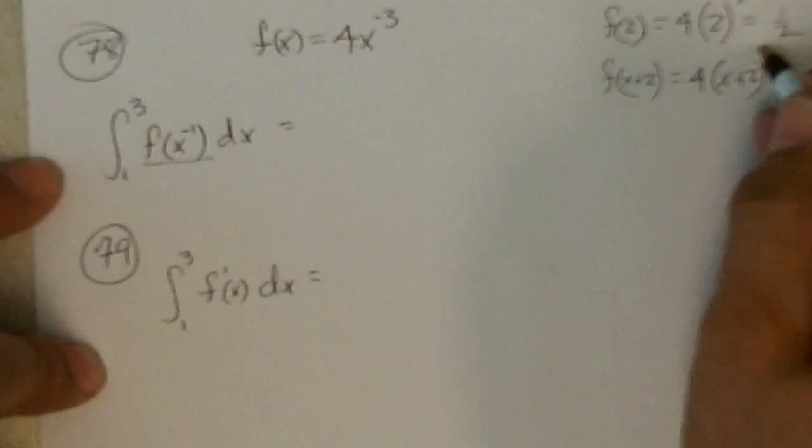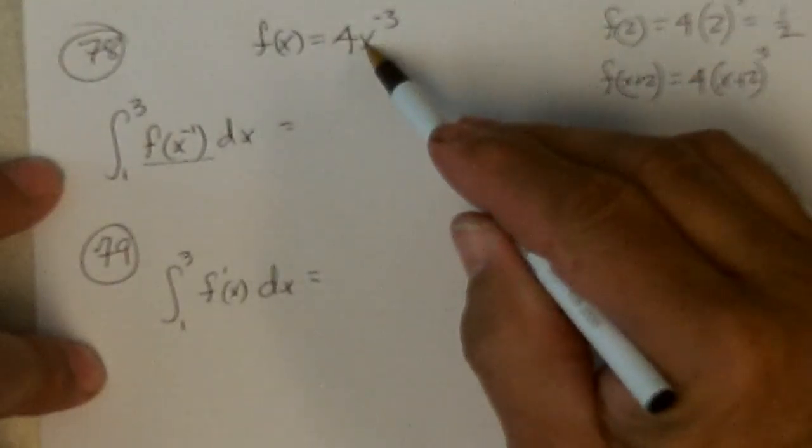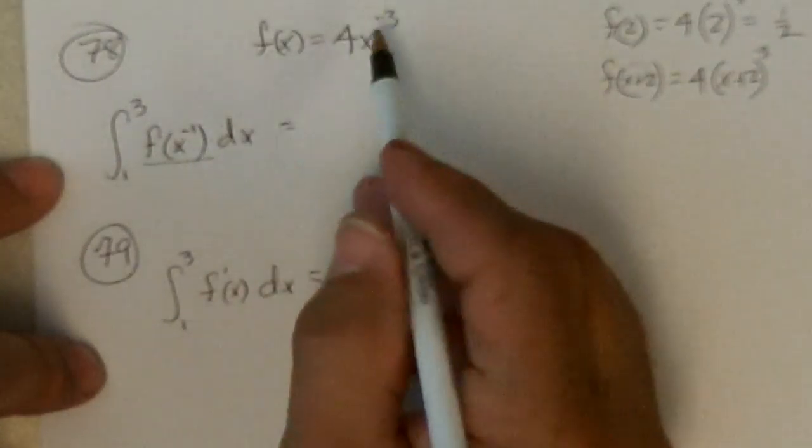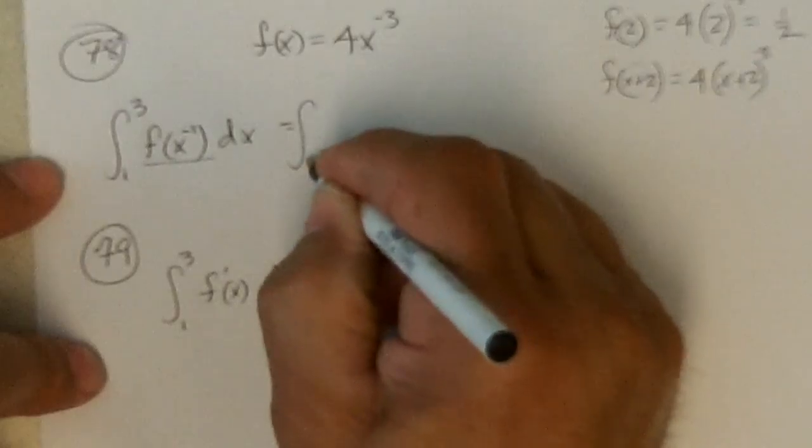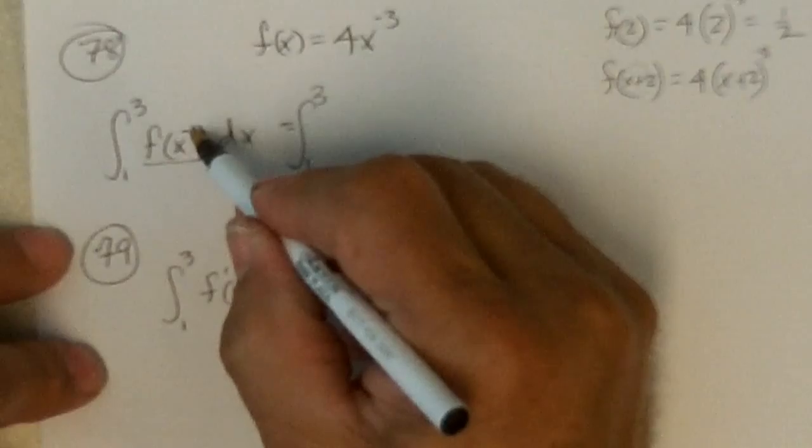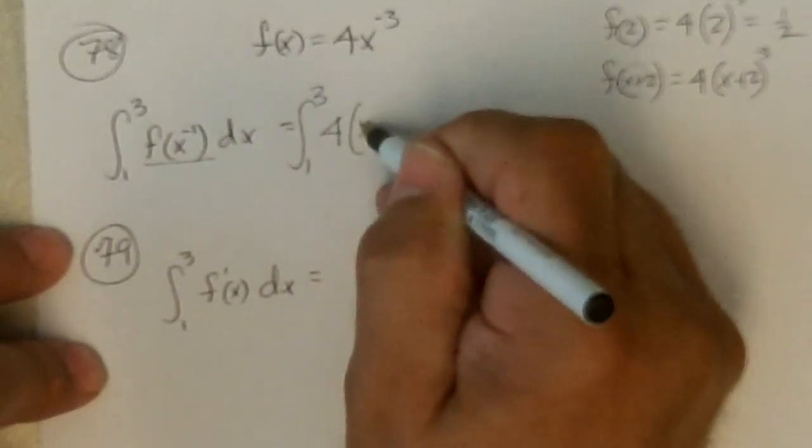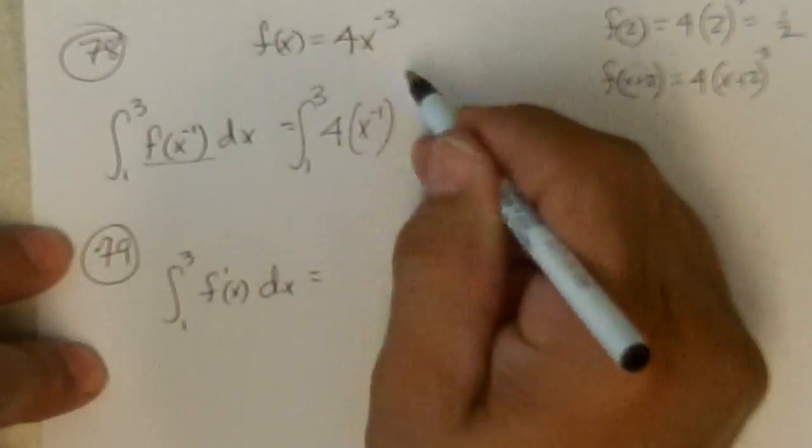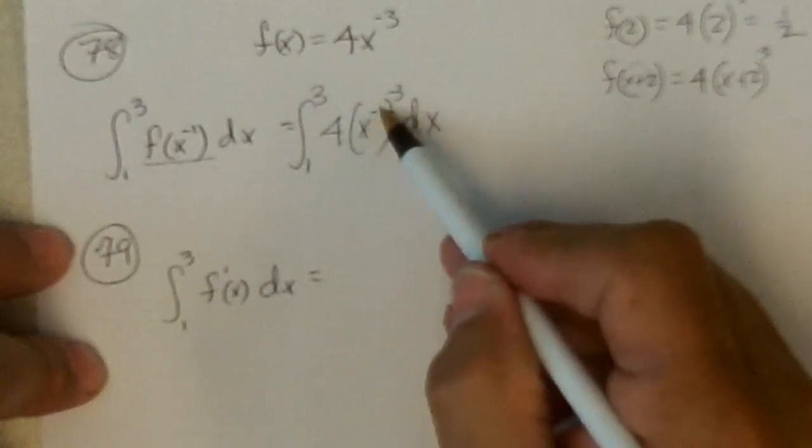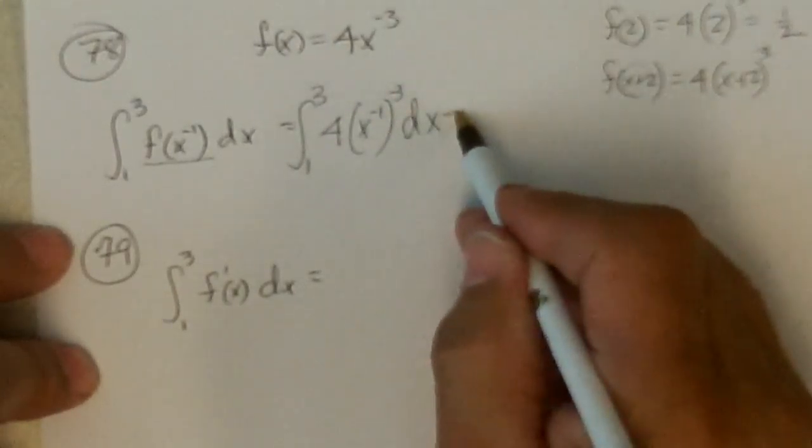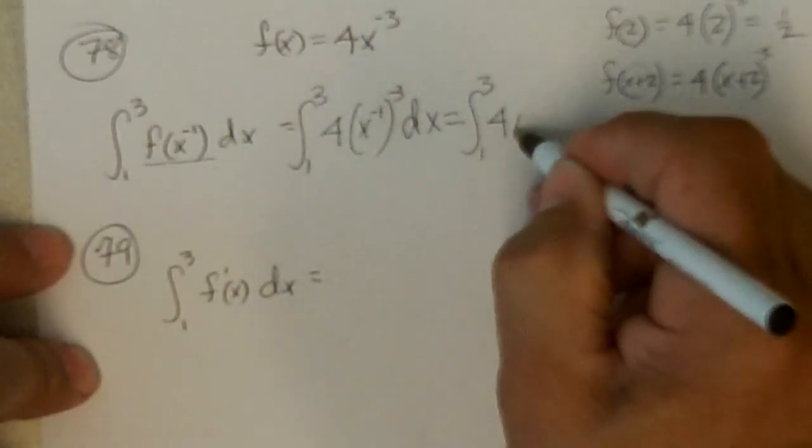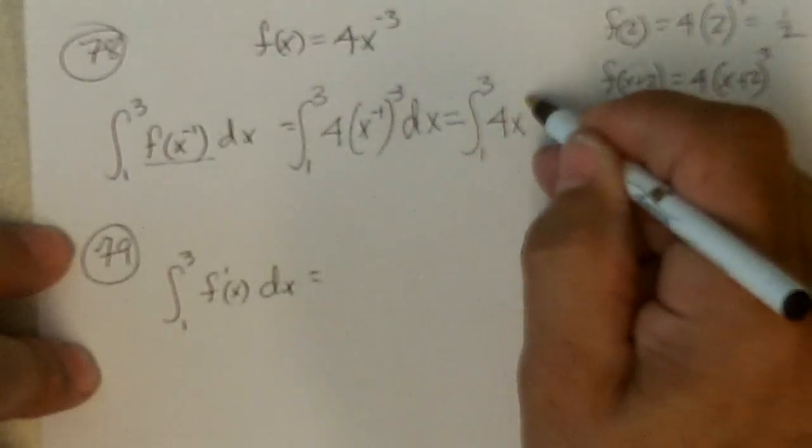And if I had to find f of x plus 2, I'd go 4 times x plus 2 to the negative 3. I replace the x position with whatever it says to put in for the x. Well, this says put x to the minus 1 in the x position. So I'm going to find the integral from 1 to 3 of f of x to the negative 1. So that's going to be 4x to the negative 1 in place of the x, and that's to the negative 3 dx.